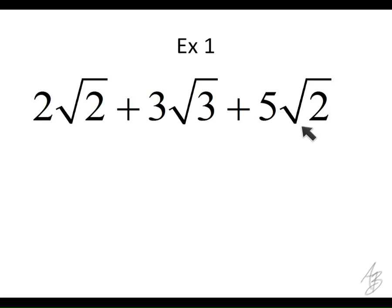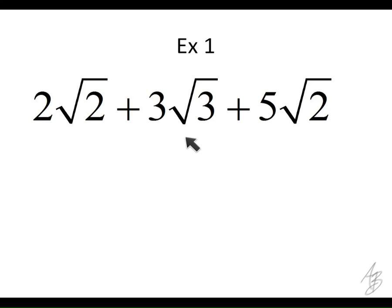So what do you guys think about that? If we do that, we get 2 plus 3 is 5, plus 5 is 10, and then on the inside we're going to have 2 plus 3 is 5, plus 2 is 7. We would have 10 square root of 7. You guys think that'll work?